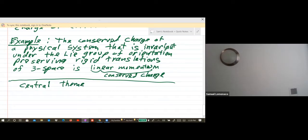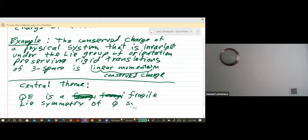And so now I get to the central theme of the talk itself, and that is: quantum entanglement is a Lie symmetry of quantum systems. Easier just to scratch something else than to erase it, I see.